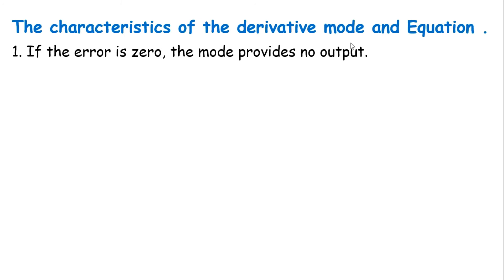Let us summarize the characteristics of derivative mode. First characteristic is, if the error is zero, the mode provides no output. Second characteristic is, if the error is constant in time, the mode provides no output.